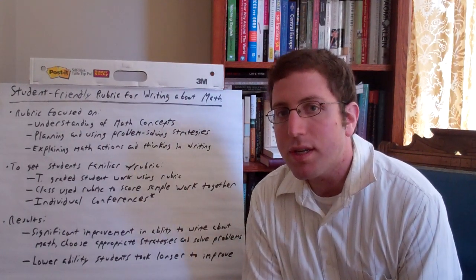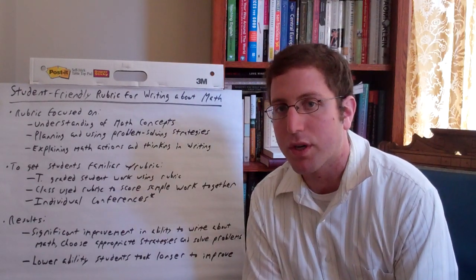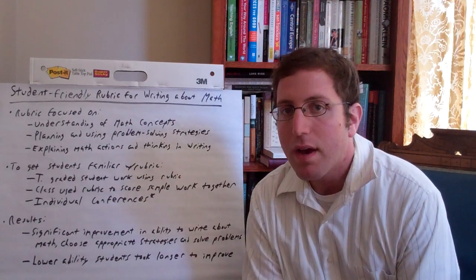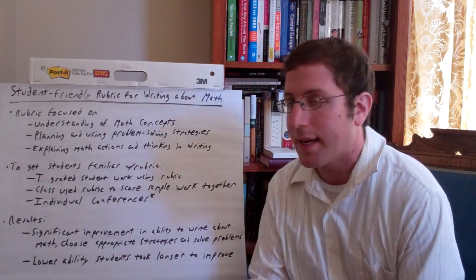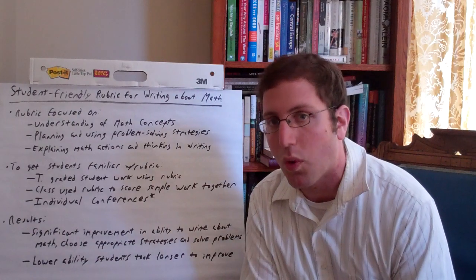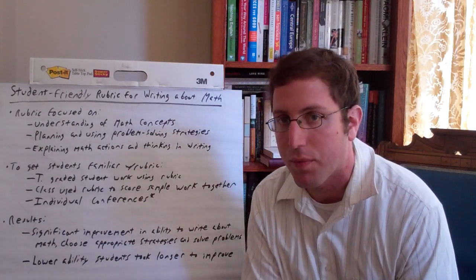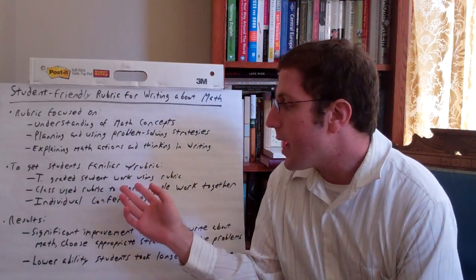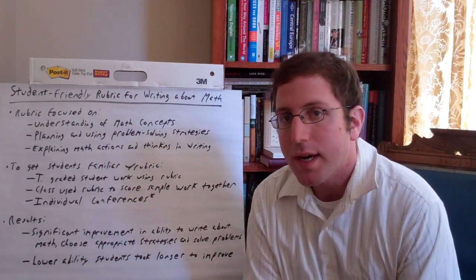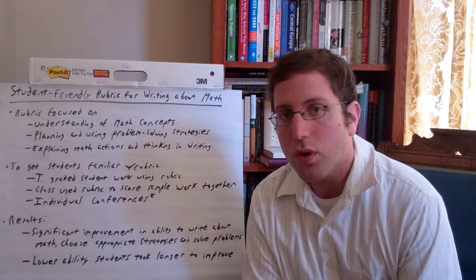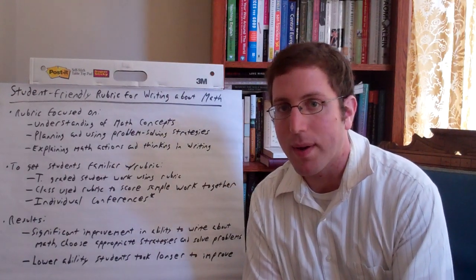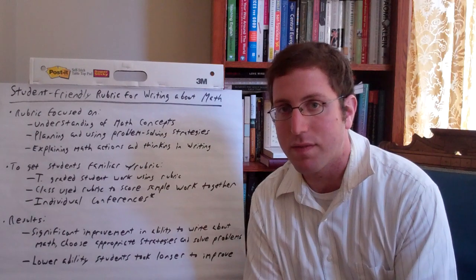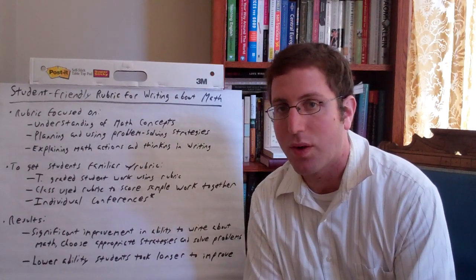And what the teacher did to really get her students familiar with how to use the rubric was handed it back to them so they could see this is why I scored this on each of the three different dimensions. Then the class used the rubric to, as a class, score some sample student work. So really get their hands on: if you were the teacher and you were grading this, what would you give it on each of these three dimensions? What score would it get and why?